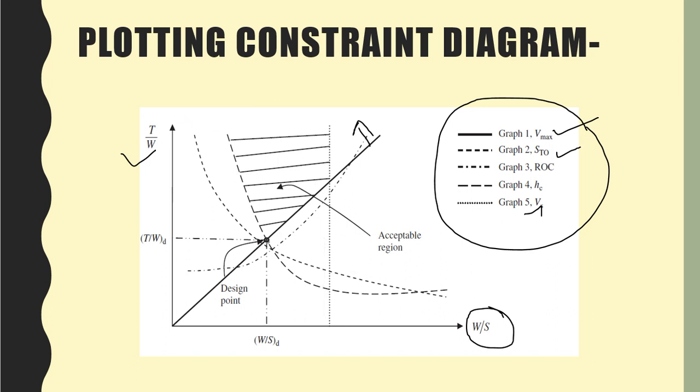After that there are other constraints such as rate of climb - after how much distance your plane should lift. See, this is the rate of climb, so this line is nothing but the rate of climb. Then the ceiling height.